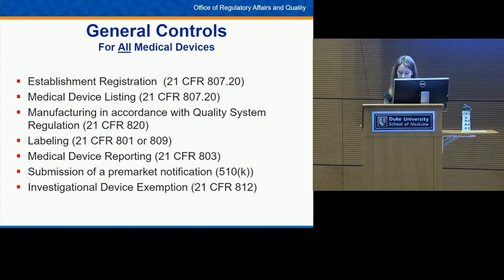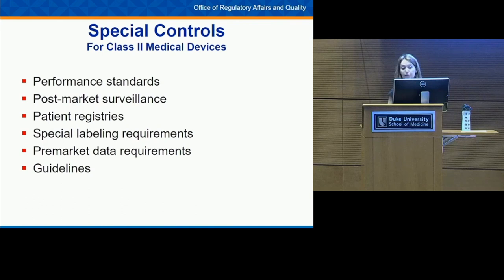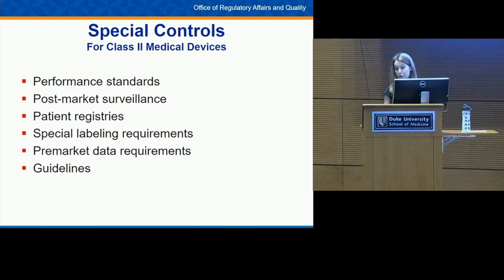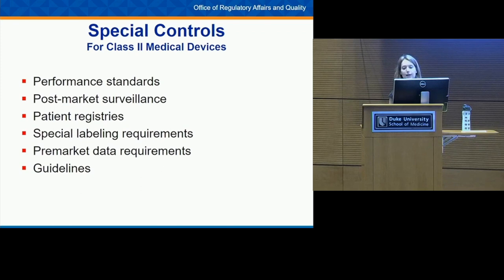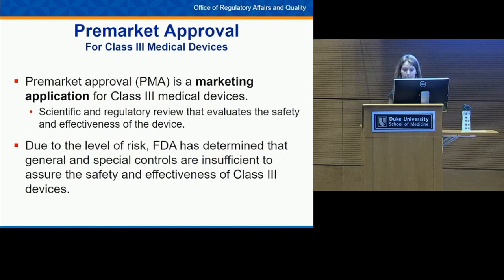Special controls are specifically required for Class II devices and are more tailored to the specific device. They may include performance standards — for example, a blood pressure cuff must pass specific accuracy tests. There may also be post-market surveillance studies (required when device failure would be serious, or for pediatric populations or implants), patient registry requirements to track outcome data, special labeling requirements, and other pre-market data requirements, all dictated by the specific device being developed.